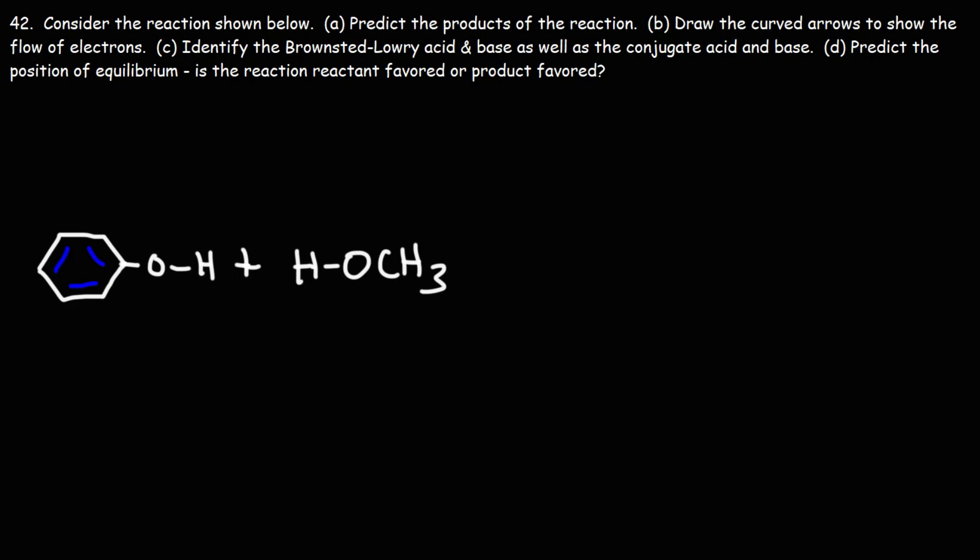Consider the reaction shown below — predict the products of the reaction. We're going to work on other reaction examples, but one at a time. First, we need to determine which molecule is going to be the Brønsted-Lowry acid and which one is going to be the Brønsted-Lowry base. To do that we need to know the pKa values of these acids.